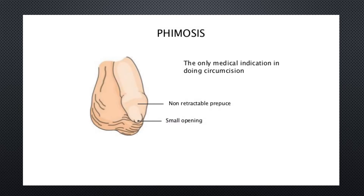Phimosis is the only medical indication for performing circumcision. When circumcision is done, the raw layer of skin is removed. Circumcision is typically done during the baby's birth or two to three weeks after birth. In phimosis there is a non-retractable prepuce and a small opening. Circumcision has many advantages from religious, social, and medical points of view.